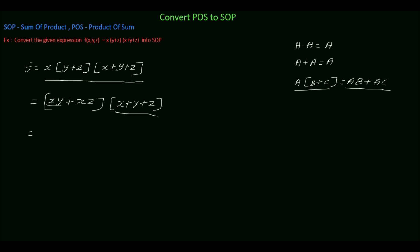So which is equal to xy into x plus xy into y plus xy into z, plus then multiply xz with x plus y plus z. So which is equal to xz into x plus xzy plus xzz.